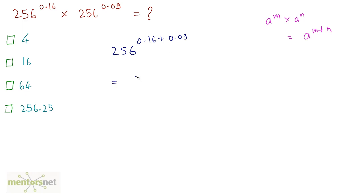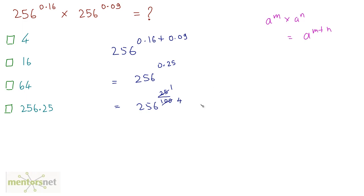This is equal to 256 raised to 0.25, and that can be written as 256 raised to 25 upon 100. Since 25 upon 100 is 1 by 4, this is equivalent to 256 raised to 1 by 4.